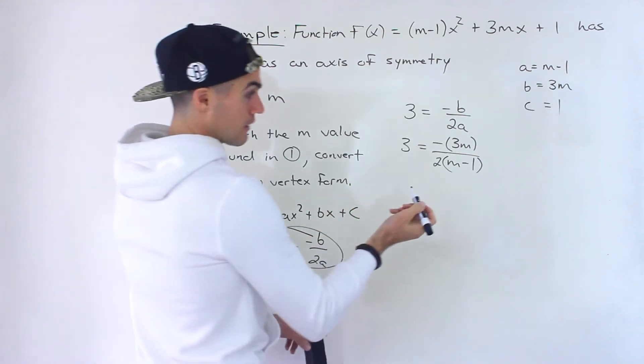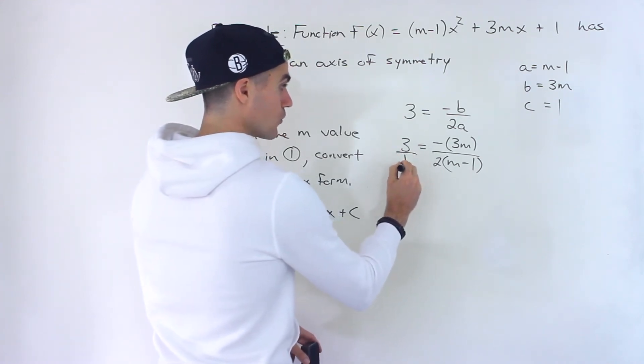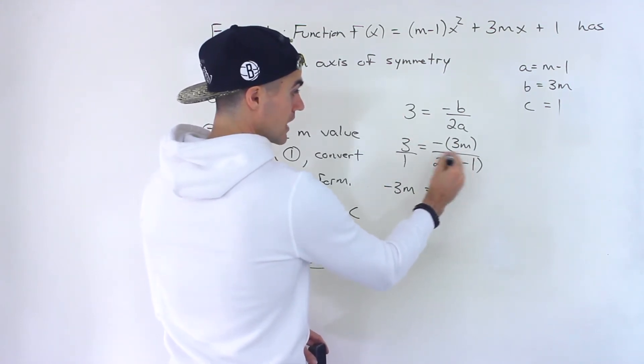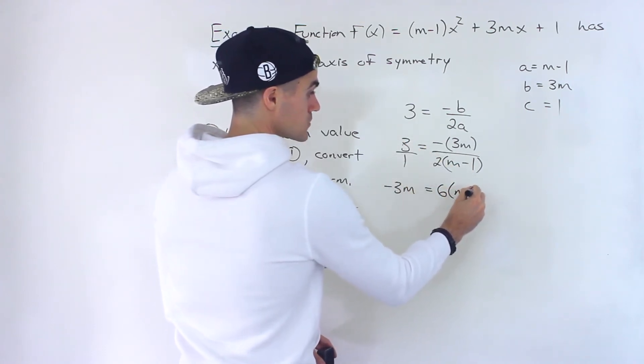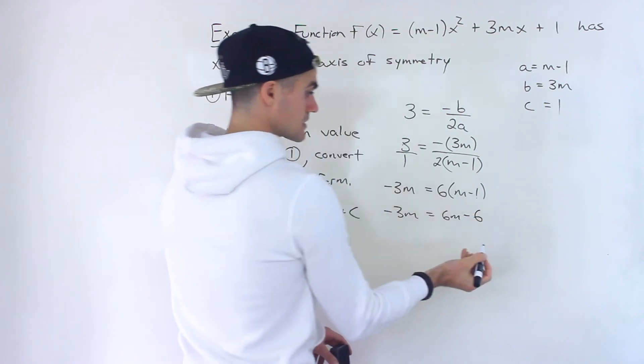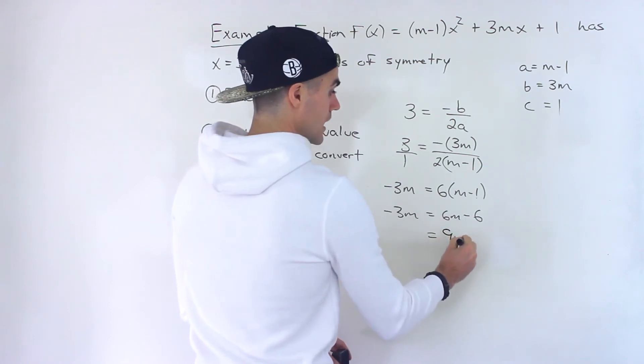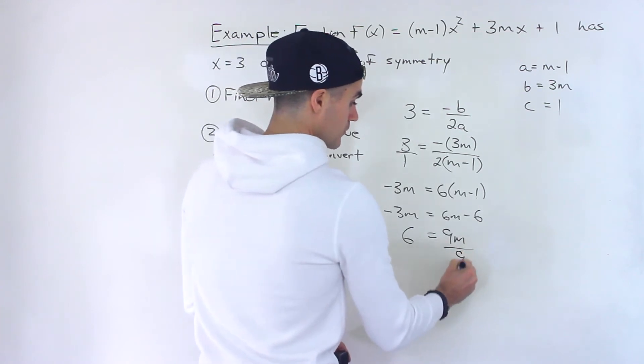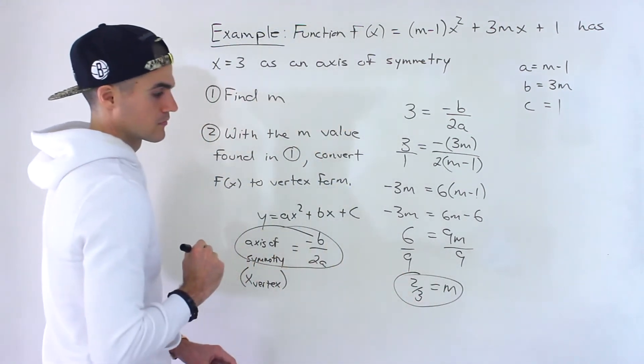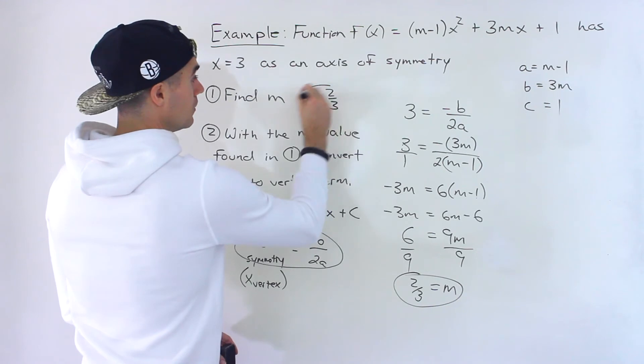And then from here, notice that we have an equation in terms of one variable so we could solve for that variable m. And the way I'm going to do it is I'm actually going to put this 3 over 1 and I'm going to just cross multiply. So 1 times negative 3m would just be negative 3m. Then 3 times this, 3 times the 2 would be 6, and then the m-1 is still in brackets. So this would end up being negative 3m equals 6m minus 6. Bring the negative 6 over, bring the negative 3m over. So we'd have 6m plus 3m, which would give us 9m. Negative 6 comes over, it's 6. Divide both sides by 9. m would equal 6 over 9, which simplifies to 2 over 3. So that's the answer for number one. That's the m value. So m would equal 2 over 3.